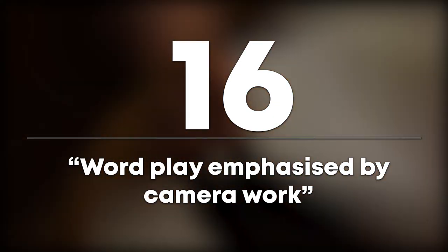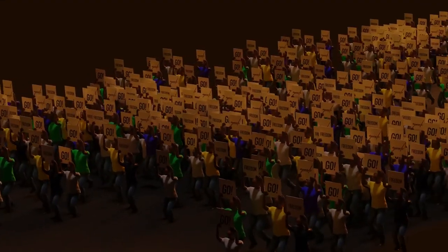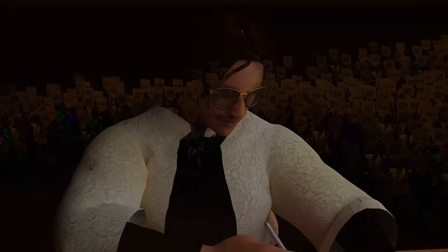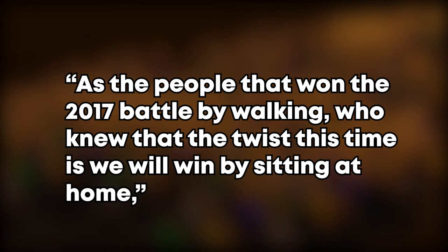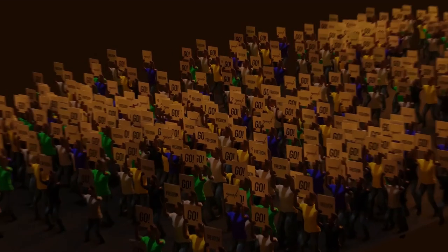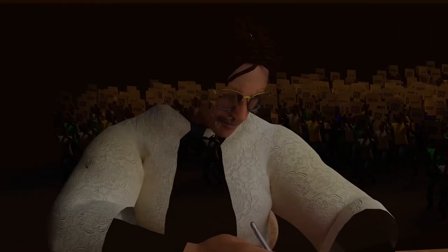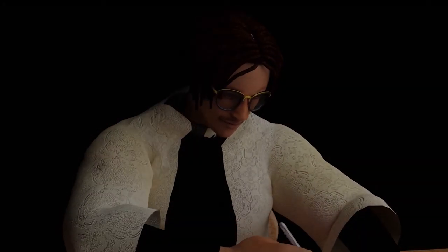Number 16: Wordplay emphasized by camera work. He He says a line translating to: as the people who won the 2017 battle by walking, who knew the twist this time would be that we win it by staying — or rather sitting — at home. This is emphasized by first showing the crowd walking ('irikufamba'), then the camera does a twist transition to He He sitting while writing ('aka gara pamba'). Hence, the twist this time is we'll win it by staying seated at home.